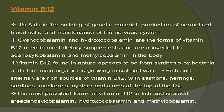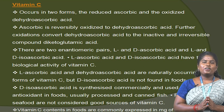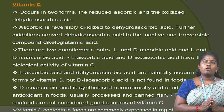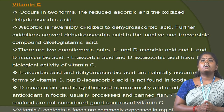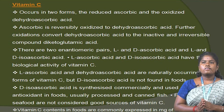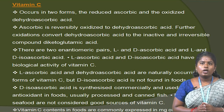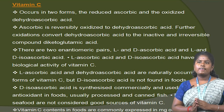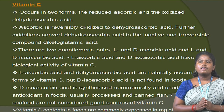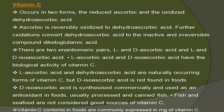The most prevalent forms of vitamin B12 in fish and seafood include the following. Vitamin C: the active forms are L-ascorbic acid (the reduced form) and dehydroascorbic acid (the oxidized form). Ascorbic acid is reversibly oxidized to dehydroascorbic acid; further oxidation converts dehydroascorbic acid to the inactive and irreversible compound diketogulonic acid. L-ascorbic acid and dehydroascorbic acid have the biological activity of vitamin C. D-isoascorbic acid is not found in food but is commercially produced and used as an antioxidant in processed and canned foods. Fish and seafood are not considered a good source of vitamin C.